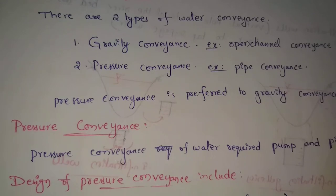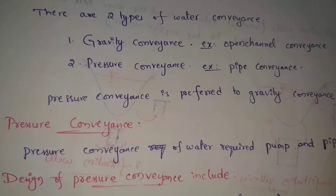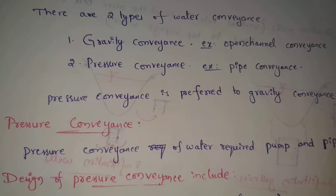Pressure conveyance requires pump and pipes, so the cost is higher. But in some cases, for example when evaporation losses are too much, or when we need to transport water from lower level to higher level, we must use pipes, so pressure conveyance is necessary.